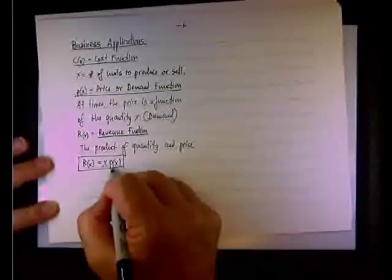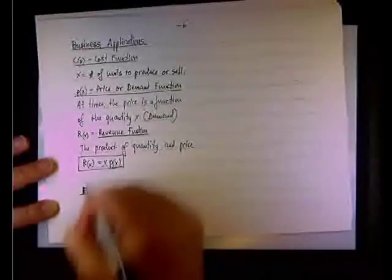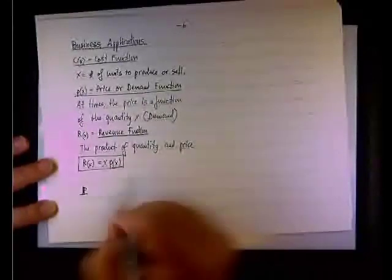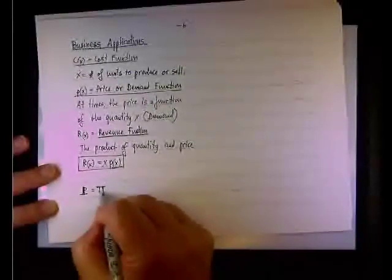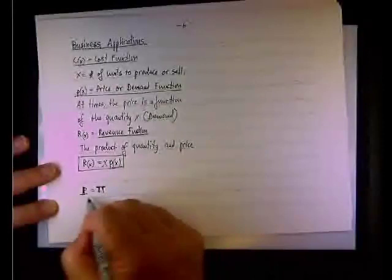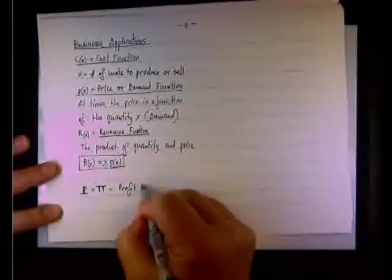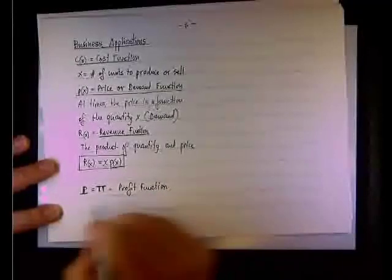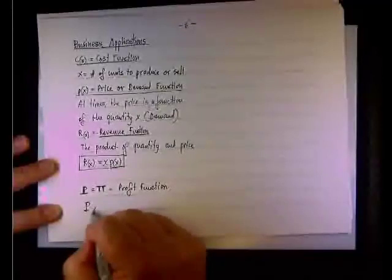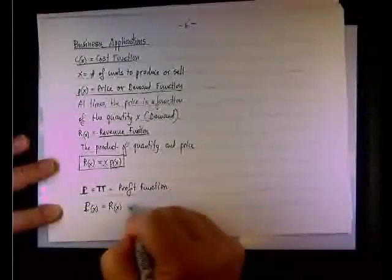And finally, the goal of each business is the profit function. Let's call it P uppercase. We have P lowercase, which is the price right there. Sometimes in business calculus, you'll see the uppercase pi. That would be the profit function. And the profit is basically the difference between revenue and cost. So P equals R minus C.